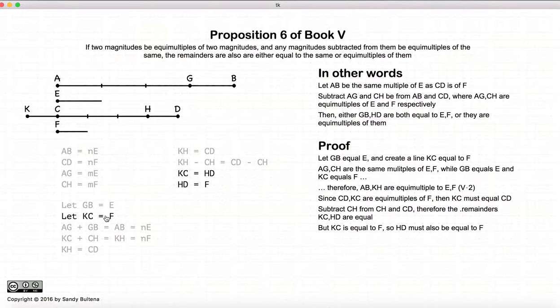But KC was started off to be F. So if KC is equal to HD and KC is also equal to F, HD is equal to F.